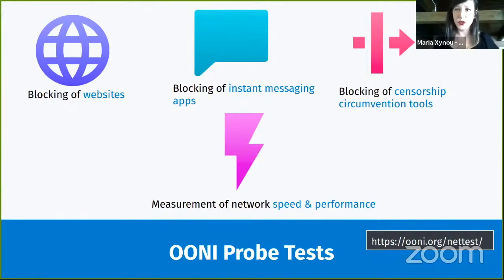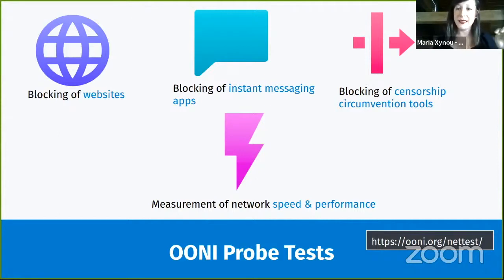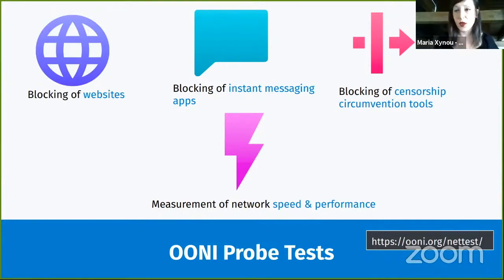For example, if I'm connected to Vodafone in Italy, the tests I'm running are checking whether Vodafone in Italy is implementing specific types of censorship. We have many different types of tests that have been developed from 2012 until today, and we're constantly creating new tests.